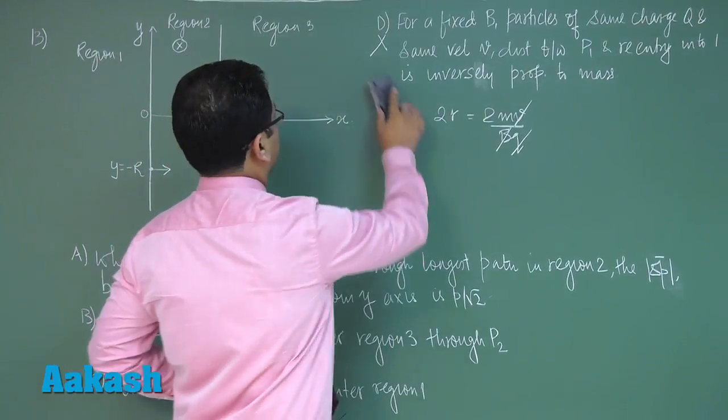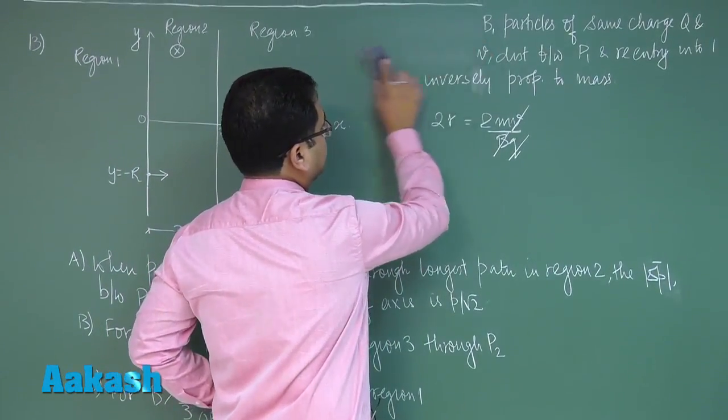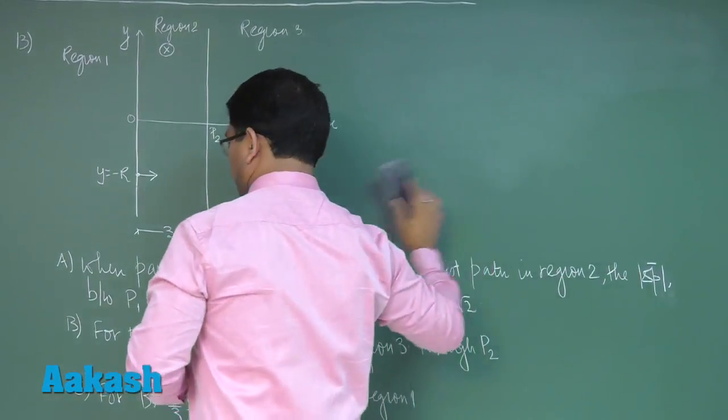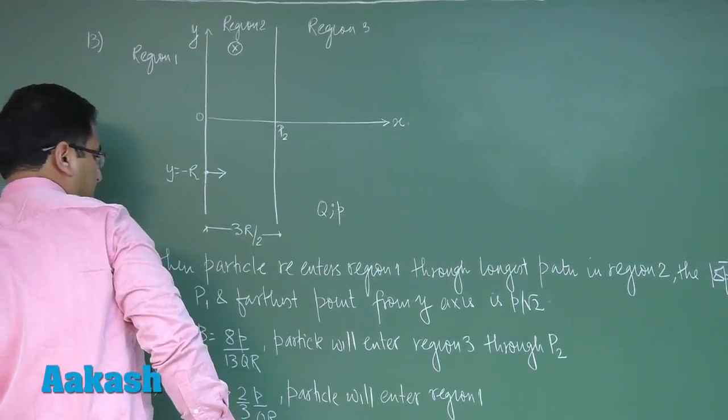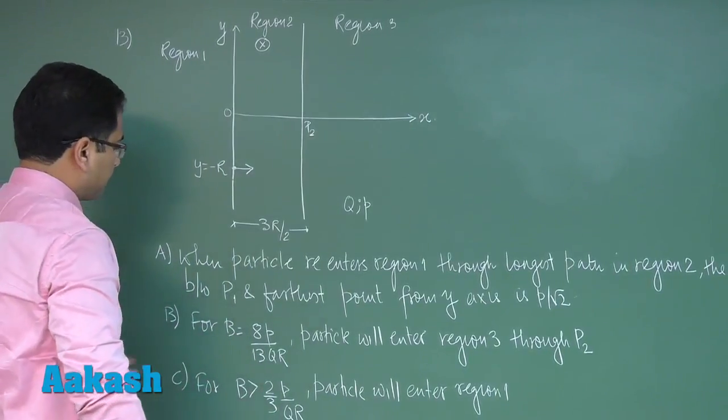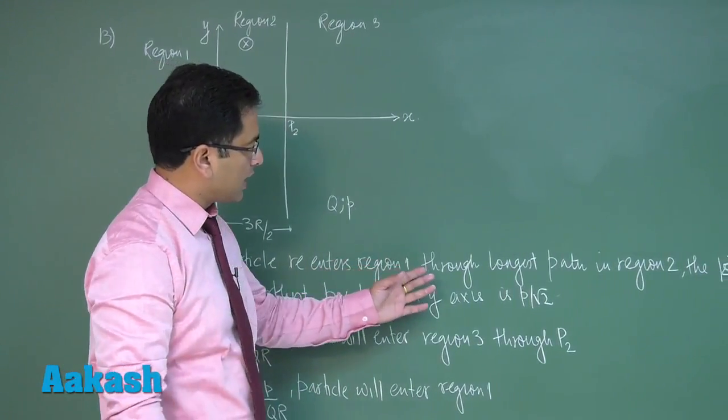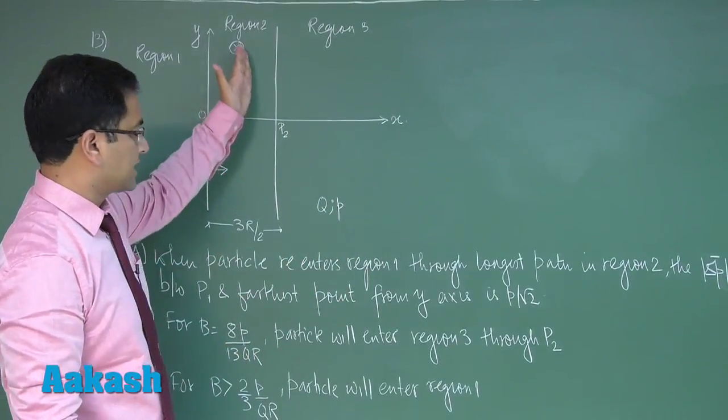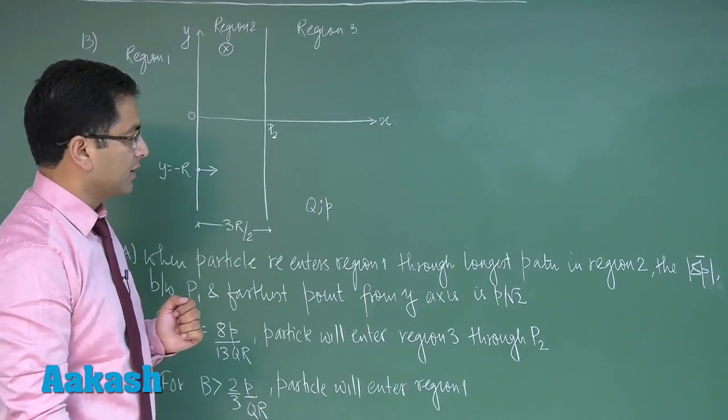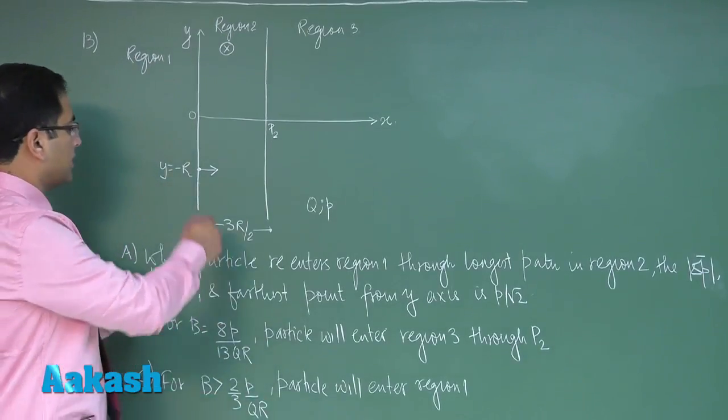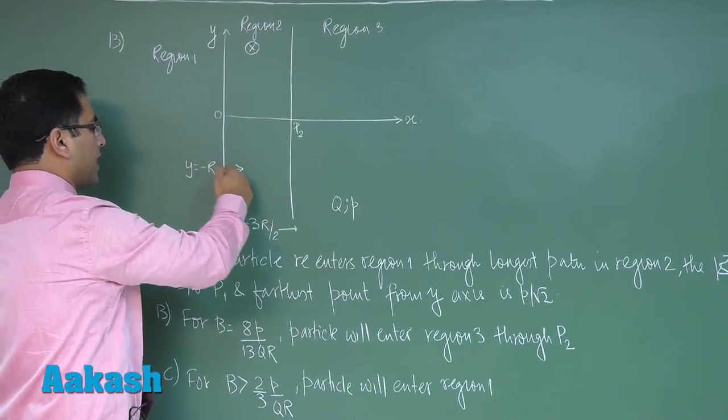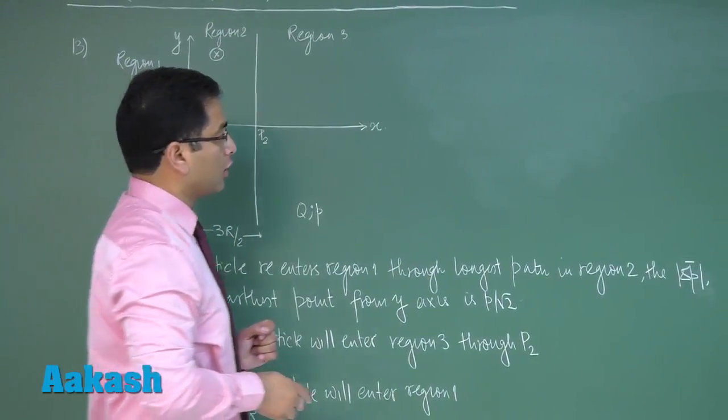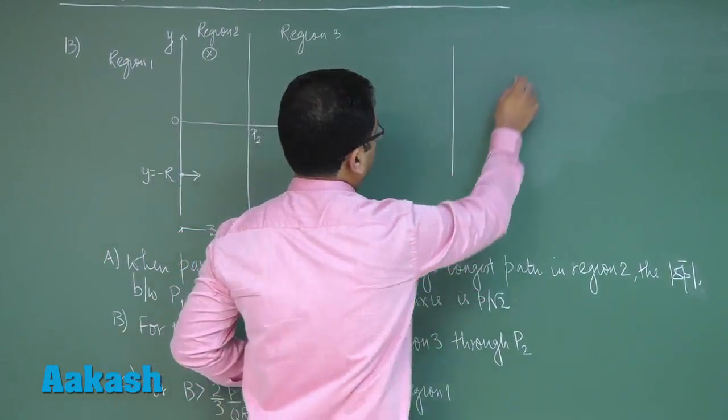Now let's try to verify a, b and c. To go with option a, b and c, let's try to see when particle re-enters region 1 through longest path, through a semicircle. That would be the longest path in region 2. There are different radii semicircles that can be formed but the question asks us longest path.